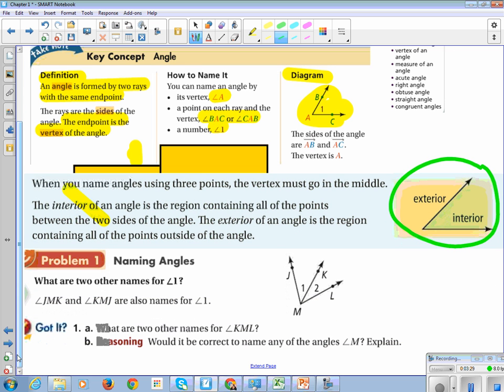Let's look at the example problem. What are two other names for angle 1? Angle 1 is this one on the left here, and they say angle JMK and angle KMJ are also names for angle 1. Make sure you put this diagram in your notes and write: What are two other names for angle KML?